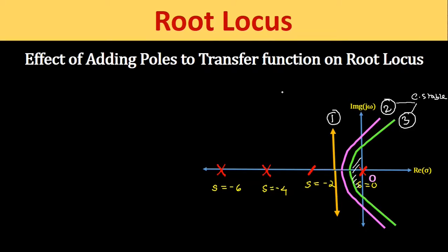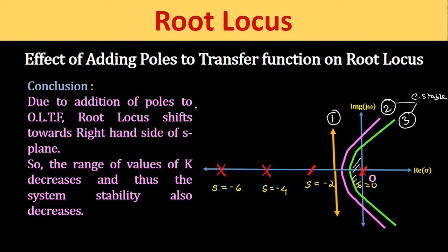The conclusion is: due to the addition of poles to the open loop transfer function, the root locus shifts towards the right hand side of the S plane. The range of values of K decreases and thus the system stability also decreases, because the range of operating K shrinks as more poles are added.